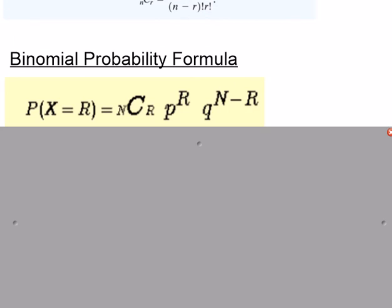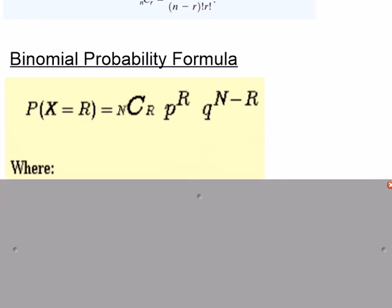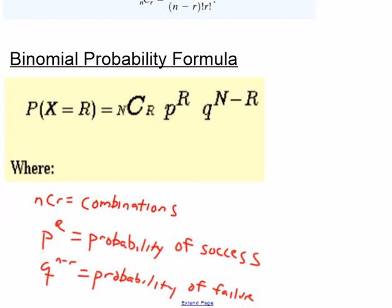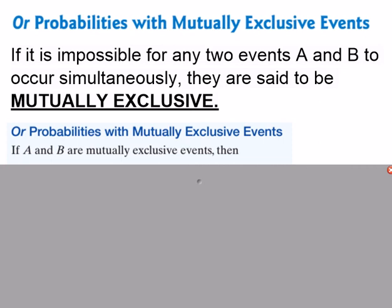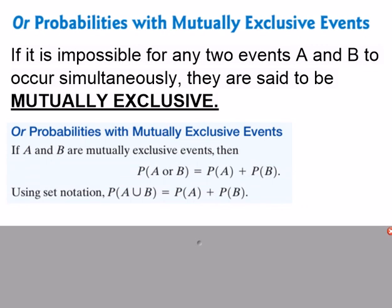Binomial probability connects to Pascal's triangle, which we saw earlier in the year. The formula involves the number of combinations times the probability of the event occurring raised to a power, times the probability of the event not occurring raised to a power. Examples will make this clearer.